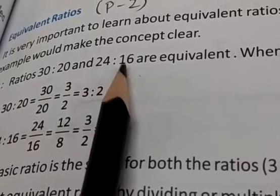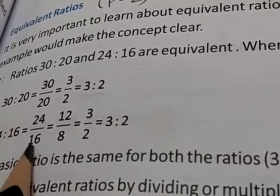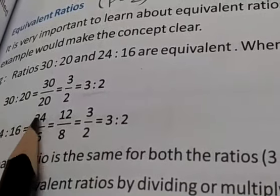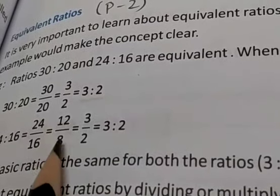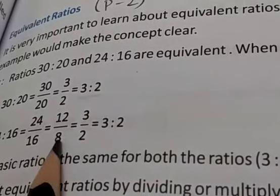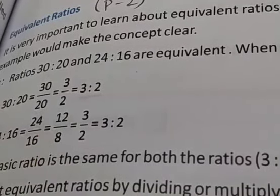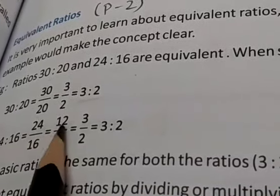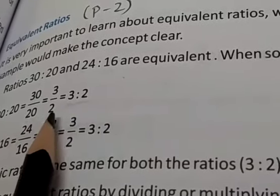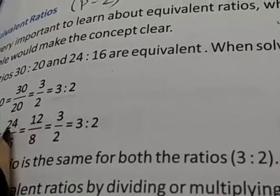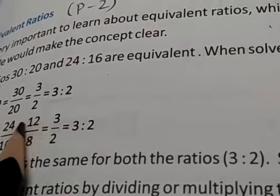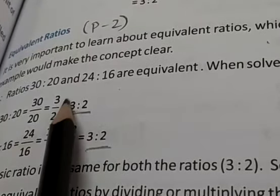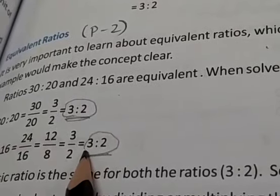Next, we have 24 and 16. Same thing — I am taking it in fraction form: 24 by 16. I am converting this to simplest form. 2 ones are 2, 2 eights are 16 — so 12 and 8 is the first simplest form I got. Next, can it be converted to a still simpler form? Are they having any common factor? Yes, they are having the common factor — that is 4. Dividing by 4: 4 threes are 12 and 4 twos are 8.